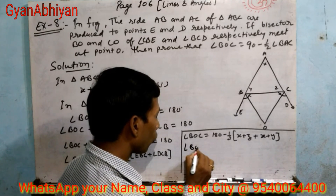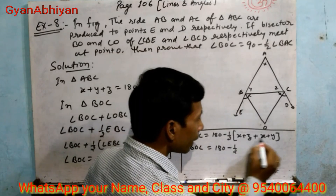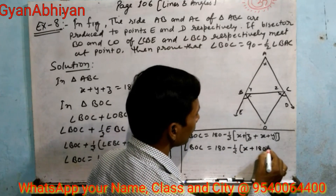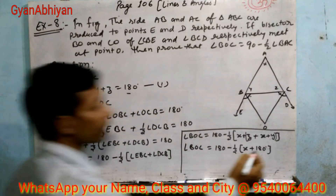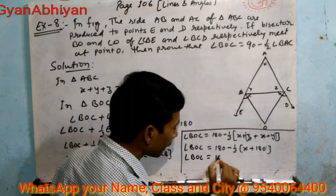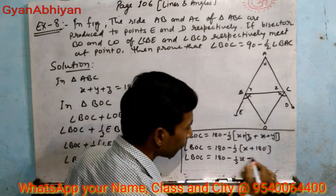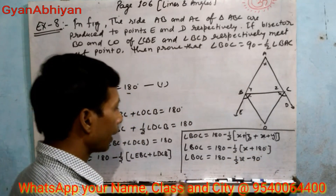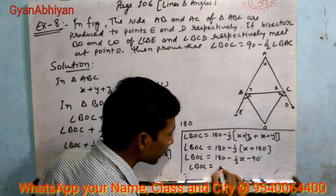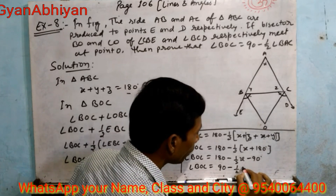अब substitute करते हैं: angle BOC equal to 180 minus 1/2 (angle EBC plus angle DCB) = 180 minus 1/2 (x plus z plus x plus y). यानी 180 minus 1/2 (x plus x plus y plus z). हमने equation 1 से जाना कि x plus y plus z equal to 180, तो x plus y plus z को 180 लिखते हैं। तो यह हो जाएगा: angle BOC equal to 180 minus 1/2 × x minus 90, जो simplify होकर 90 minus 1/2 x बनता है।